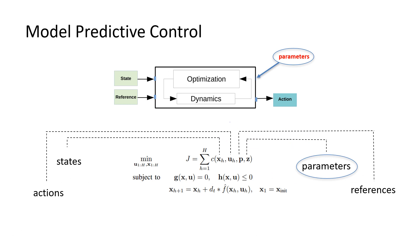Model predictive control makes use of constraint optimization and the system dynamics for optimal control. It takes states, references, and some hyperparameters as input and outputs the optimal control commands for the robots. Here, the hyperparameters are normally designed by human experts.